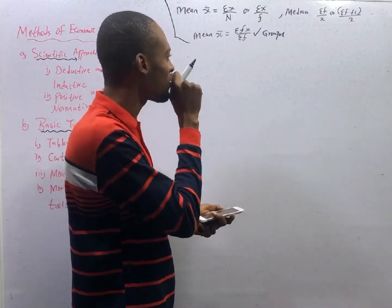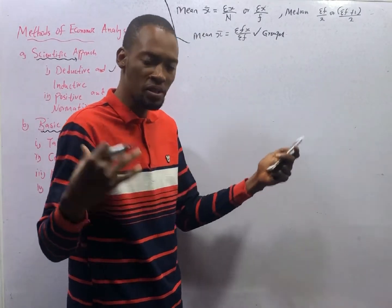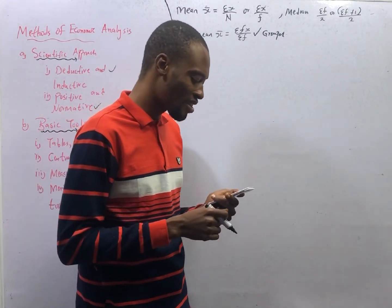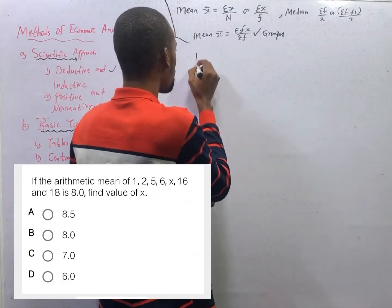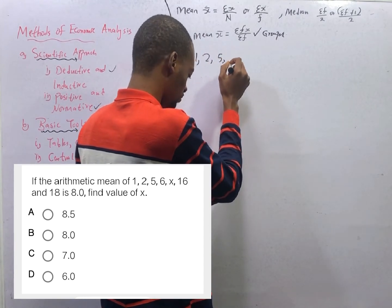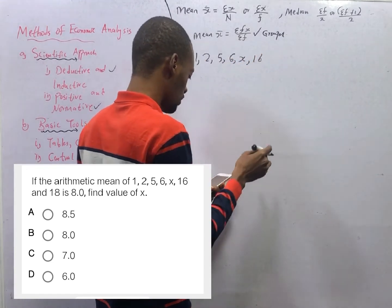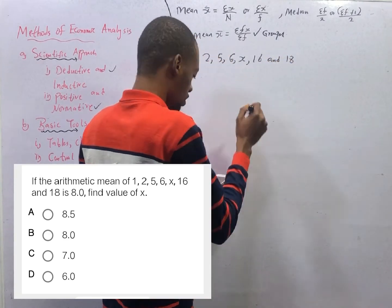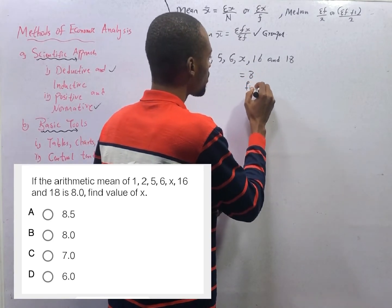The first question we have today says: if the arithmetic mean — the mean we've been solving is also known as arithmetic mean, so don't let that confuse you — if the arithmetic mean of 1, 2, 5, 6, S, 16, and 18 is equal to 8, find S.